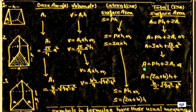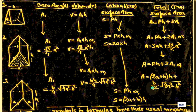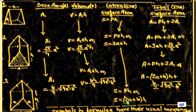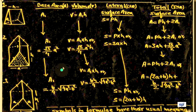Total surface area for the isosceles triangle prism: A = P into H plus 2A1, or A = (2a plus b) times H plus B upon 2 times root (4a squared minus b squared). This is the formula for finding total surface area. Lateral surface area: S = P into H, or S = (2a plus b) into H. This is the formula for finding the lateral surface area of this prism.